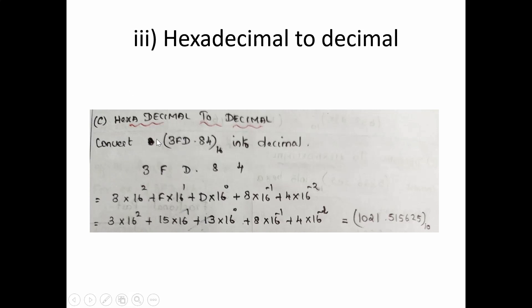The integer part is 3FD and the fractional part is 0.84. The positions are units, tens, hundreds, so power is 2 for 3. The expression is: 3×16² + F×16¹ + D×16⁰ + 8×16⁻¹ + 4×16⁻². F is 15 and D is 13, so substituting and calculating gives 1021.515625 base 10.